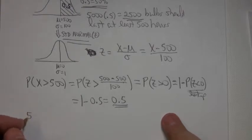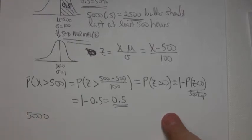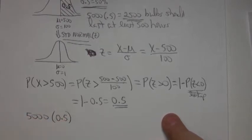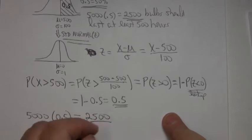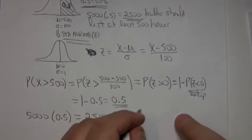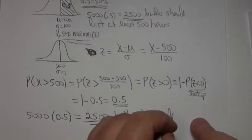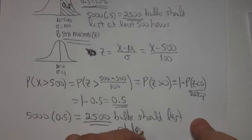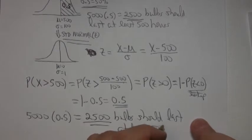So if you've got 5,000 bulbs, and half of them are going to last that long, half of 5,000 is 2,500, and you have 2,500 bulbs that should last at least 500 hours.